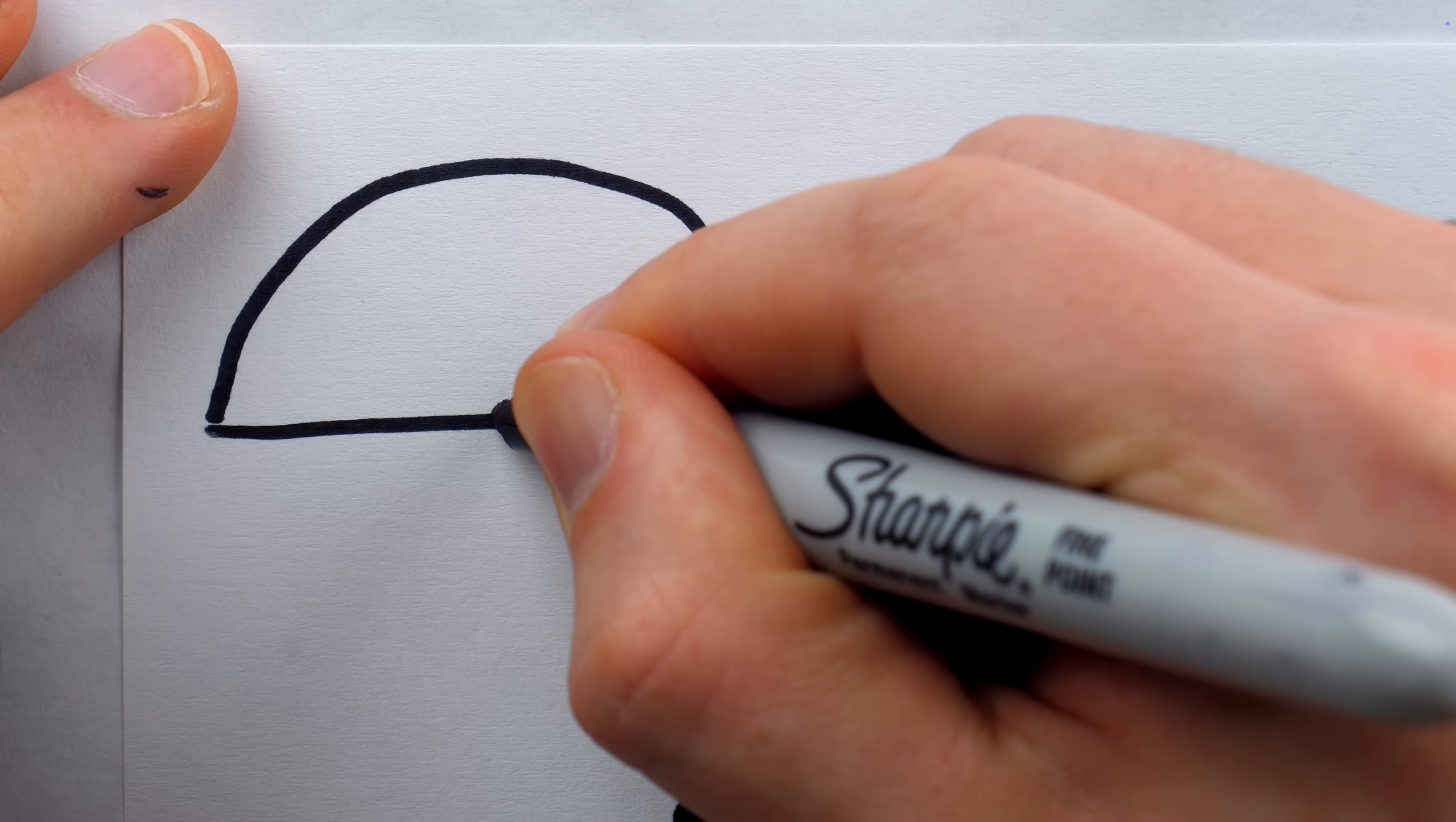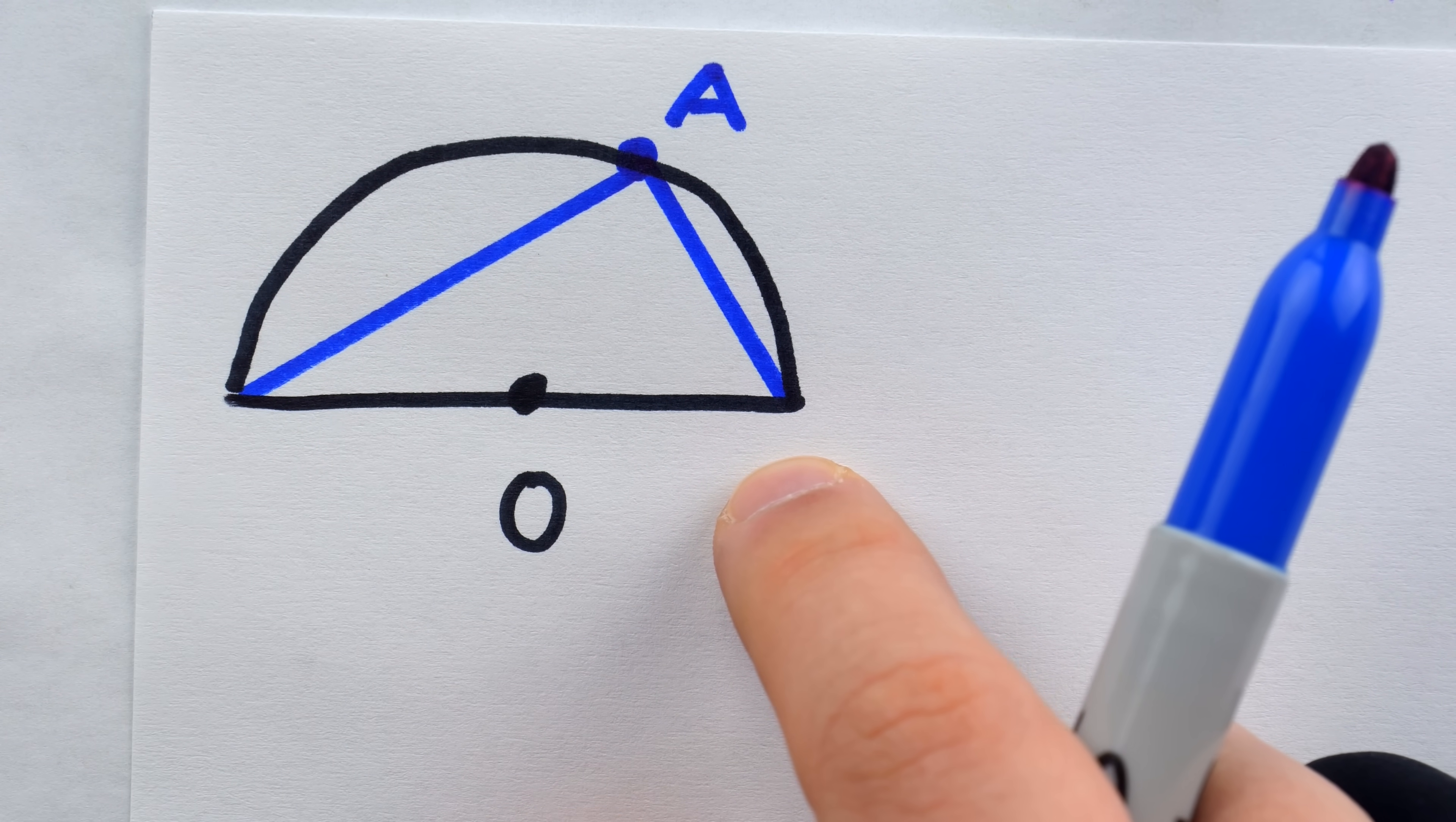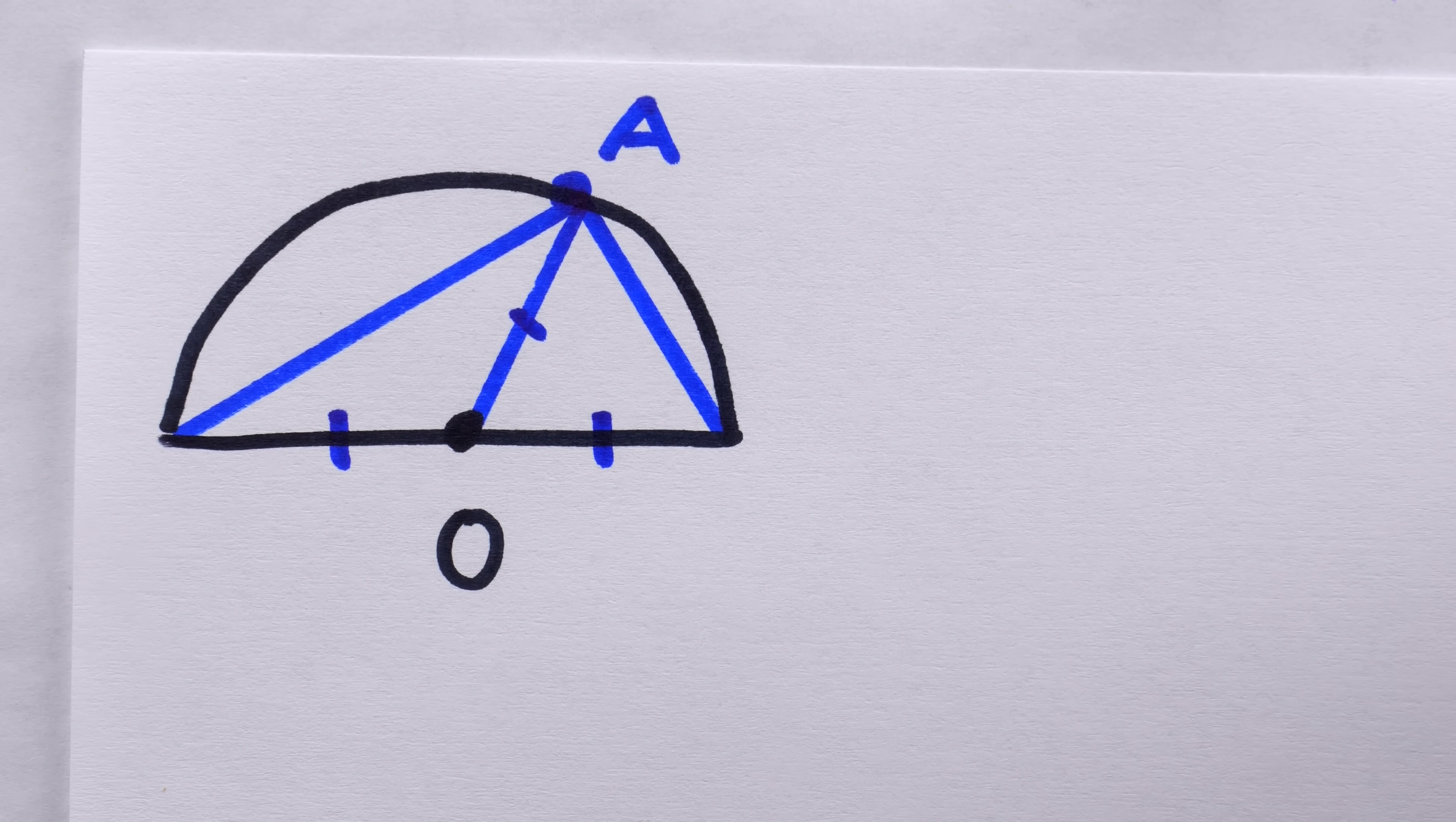Let's say that this is the center of the semicircle, we'll call that O. An arbitrary angle inscribed in a semicircle would look something like this. Now notice from the center we have a radius here and a radius there, so it will actually be advantageous to draw another radius going from the center to that vertex A of the inscribed angle. We then have three congruent segments, these segments are all congruent because they are all radii of the semicircle.